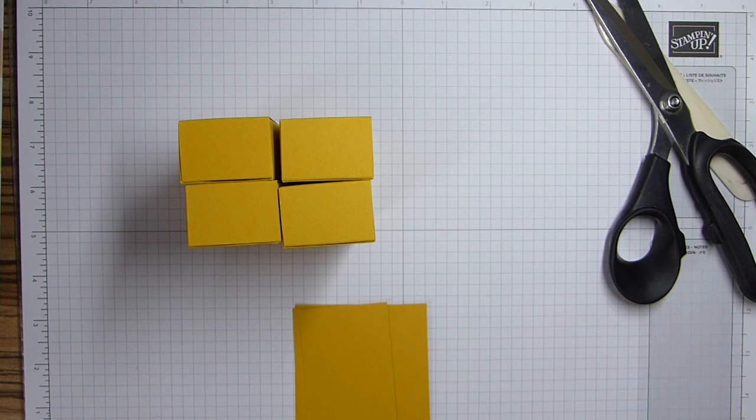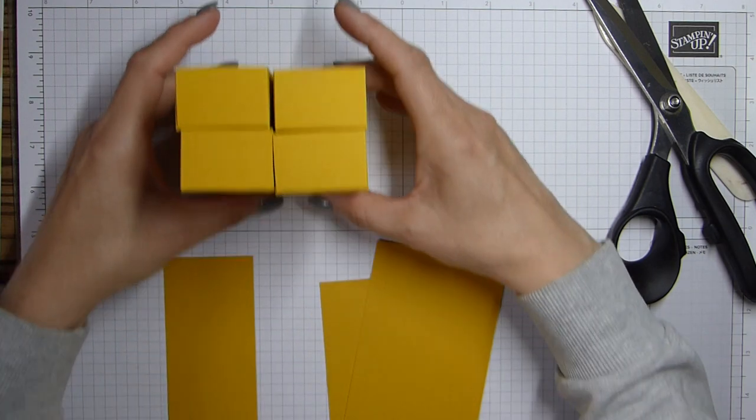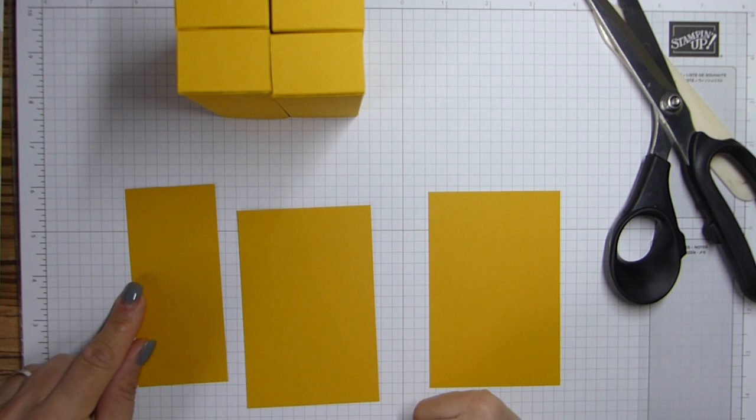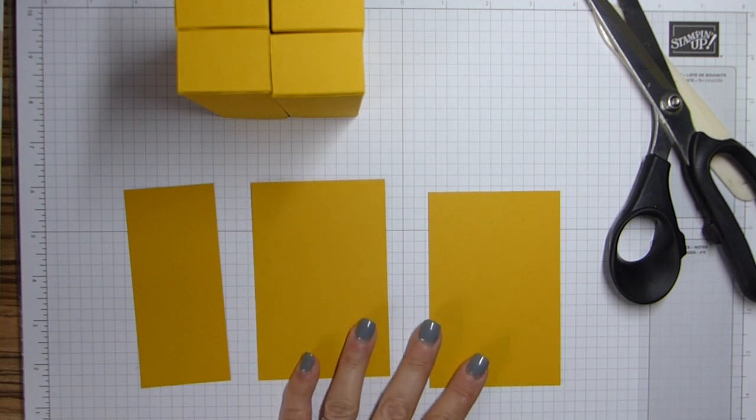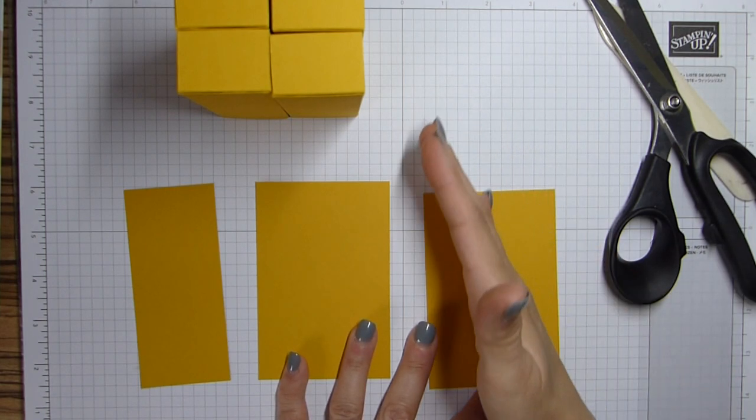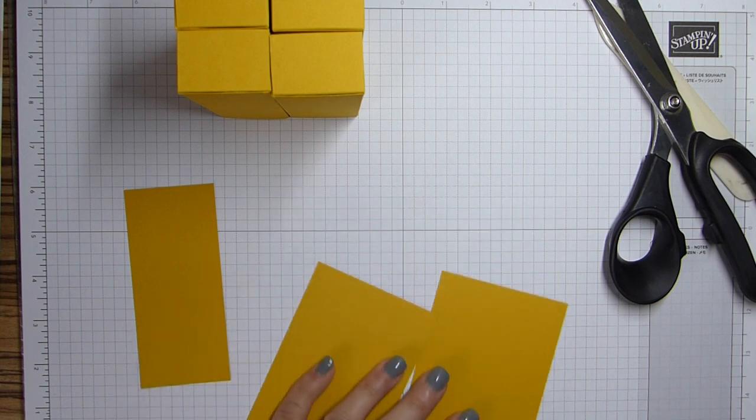So for your hinges, you need one piece that is two inches by four and a half or five by eleven and a half. And we're going to score it down the short line in half. So it will be one inch or two and a half. And then you need two pieces that are three by four and a half, eight by eleven and a half centimeters. And again, we're going to score it in half, which is one and a half or four centimeters.